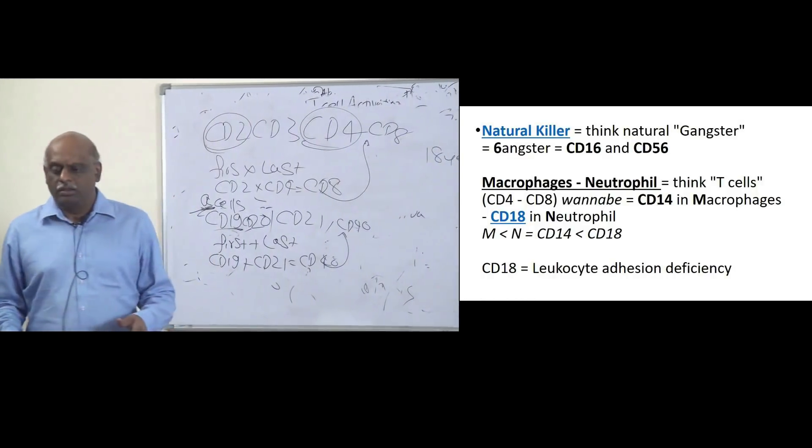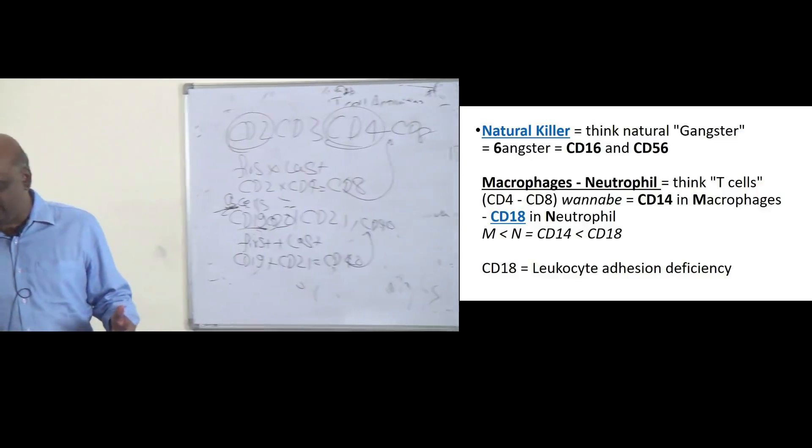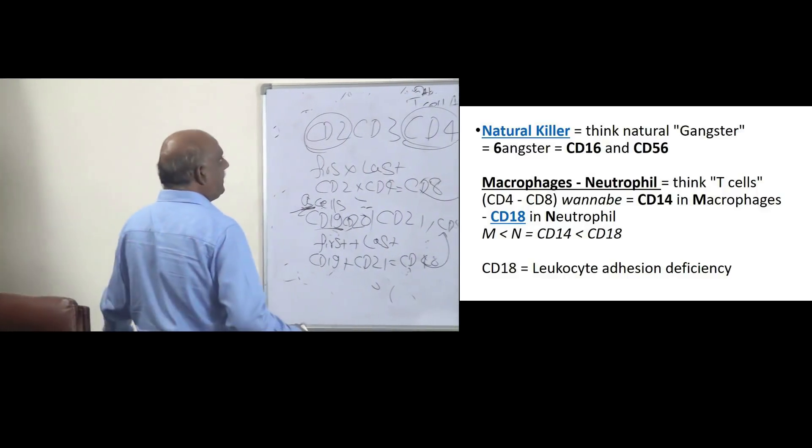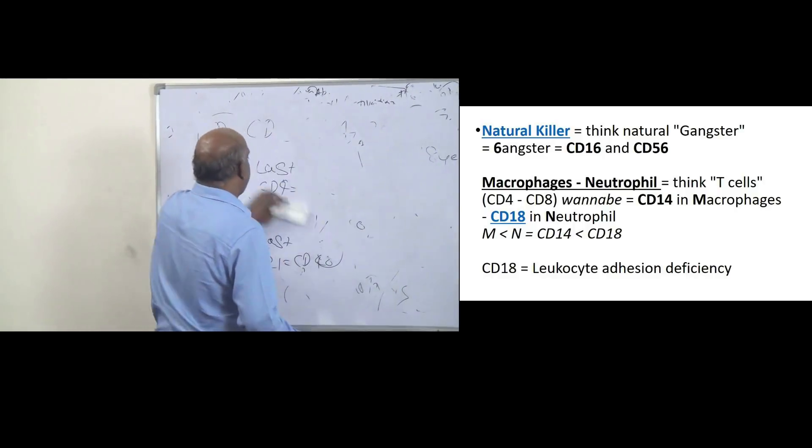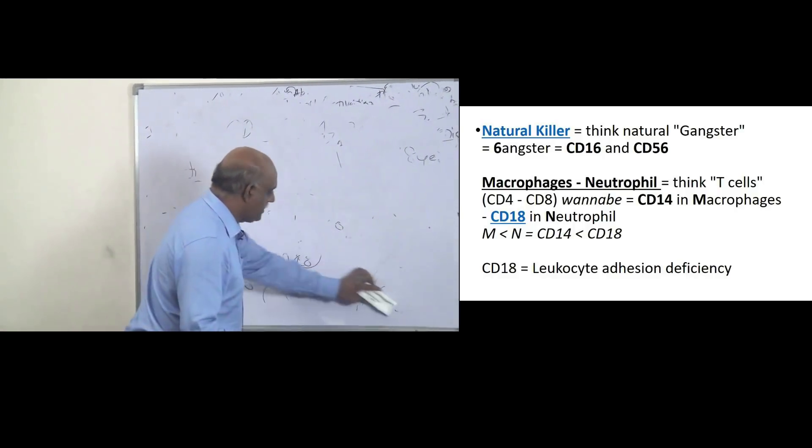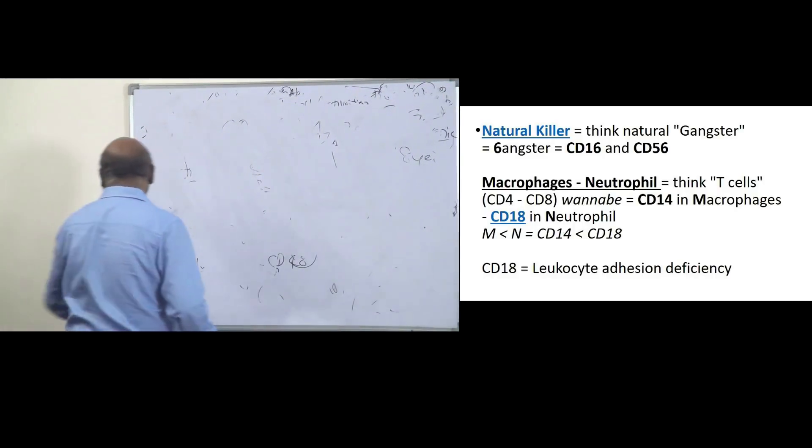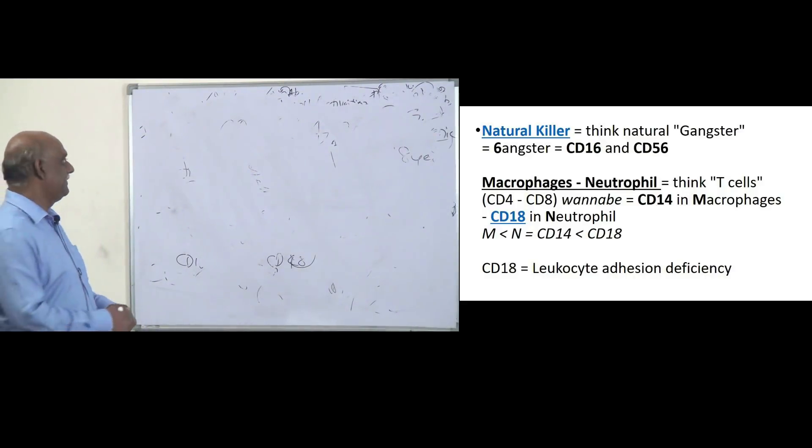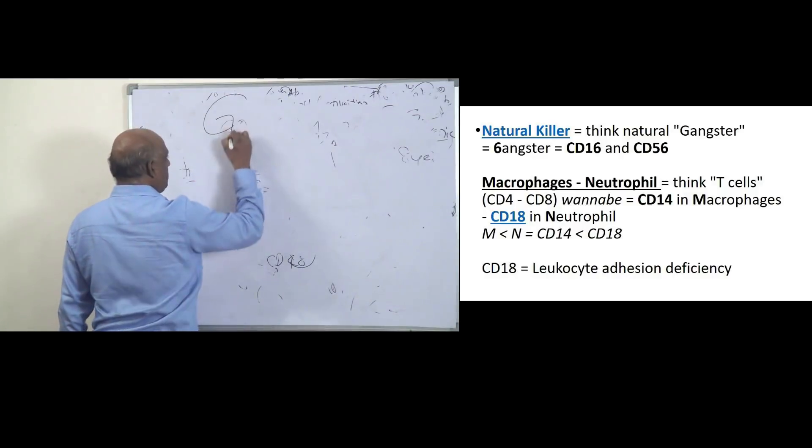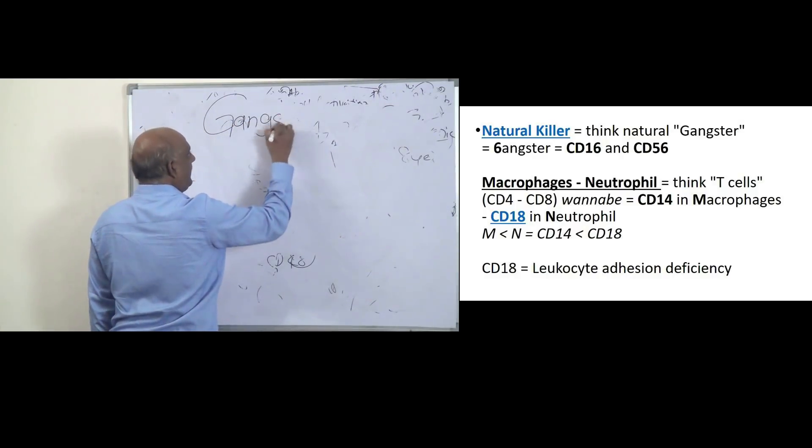Then, natural killer cells, what are their markers, is a very important cell. Killing means what will you remember, Doctor? Killing. Koi killing hai toh? Once upon a time in Mumbai. Movie dekha kya aapne? Gangster.